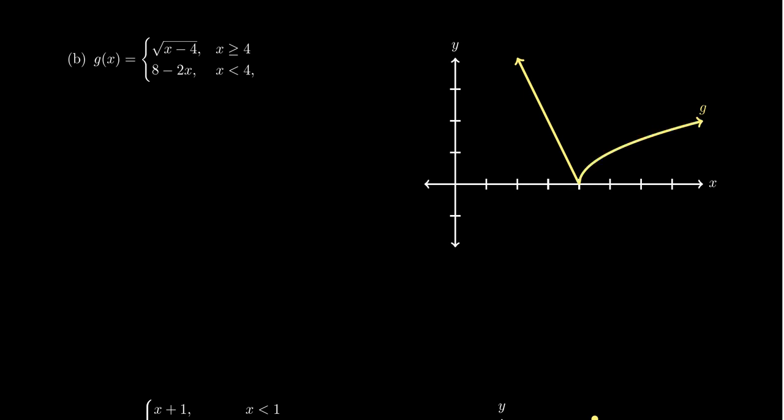It's the standard square root function that has been shifted to the right by 4 units. Then when you're less than 4, this graph will look like 8 minus 2x. This is a line which has a slope of negative 2, y-intercept of 8. Its x-intercept will be 4, and it looks like this portion right here. And so some things we can mention is that this graph is in fact continuous. It's continuous because there's no gaps or rips or breaks in the graph whatsoever. You notice that as it's switched from one part to another, it's connected.